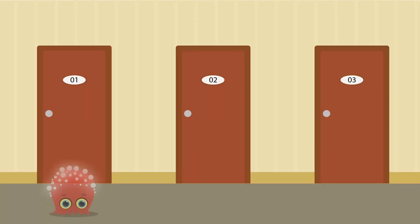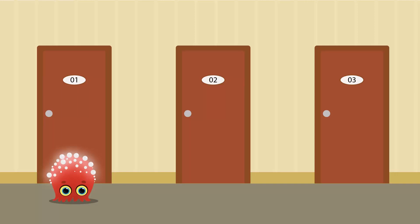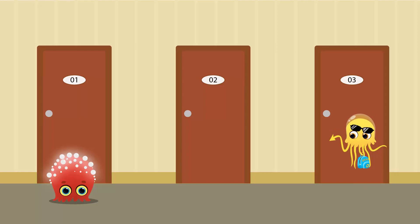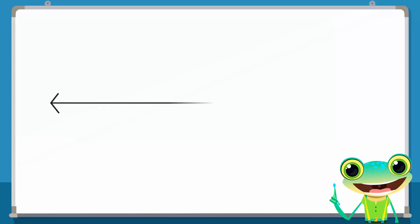Suppose Ting is standing in front of room 1 in a corridor. He wants to meet his friend Octo, who is outside room 3. In mathematics, number lines are like this corridor. The corridor is represented as a horizontal line and the doors are small vertical bars on the horizontal line.